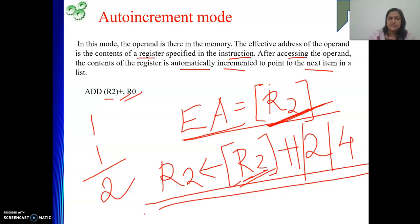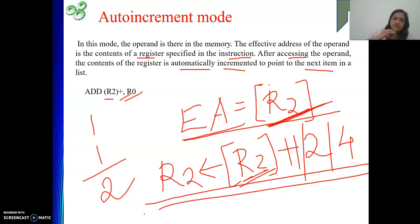This addressing mode is basically used whenever we do a POP operation with stack. Because when we do pop, the address is incremented. Stack grows downward in memory. So auto increment addressing mode is used for POP operations.